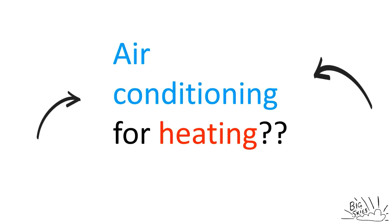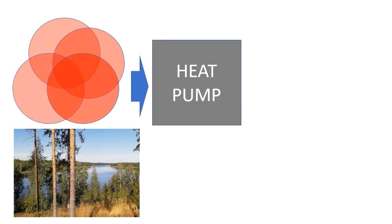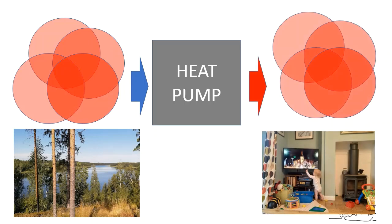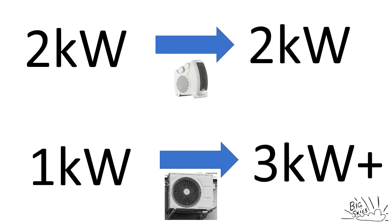Let's rewind slightly — how does air conditioning for heating work? An air conditioner is really just a heat pump. What heat pumps do is effectively take heat energy from one place — in this case outside — and transfer it to the inside. Even cold air, or what we'd consider cold air at zero or even below zero, still contains quite a lot of energy. Unlike a conventional heater that gives out a similar amount of heat energy to the electrical energy it took in, the heat pump is actually transferring energy and can give out more energy than it uses in electricity.